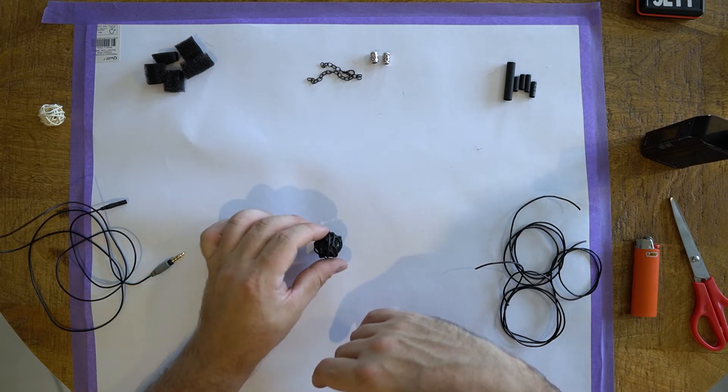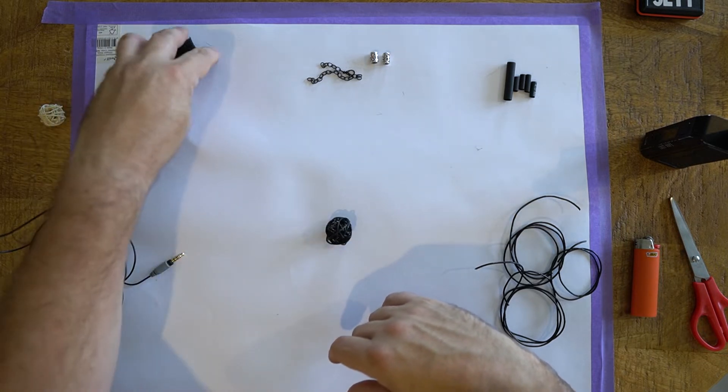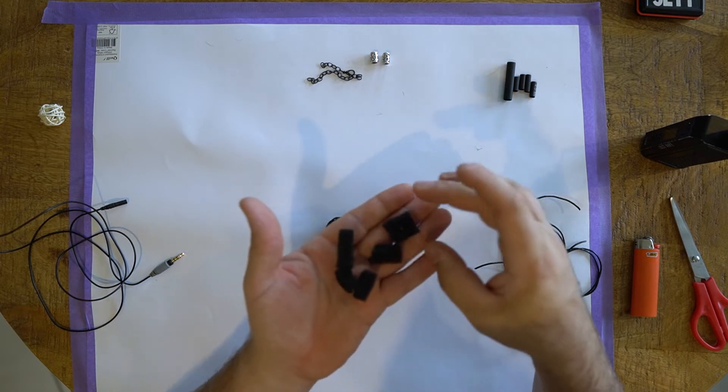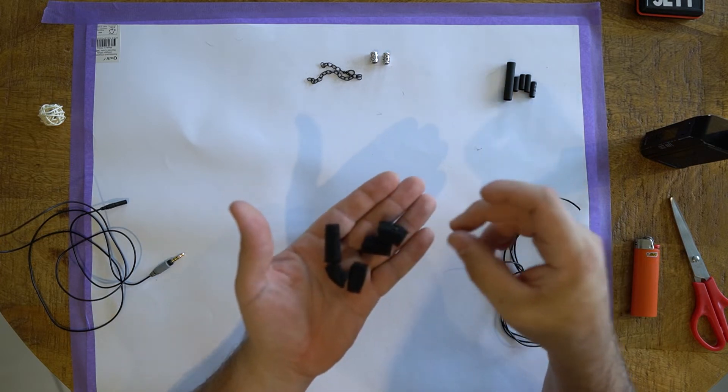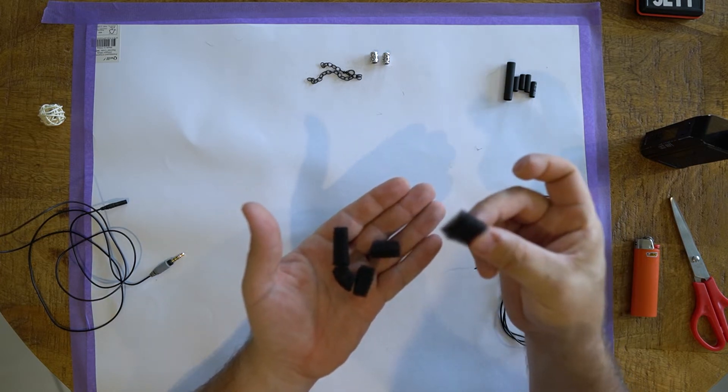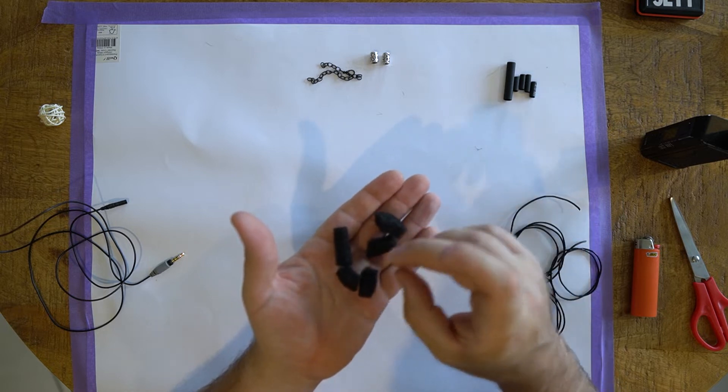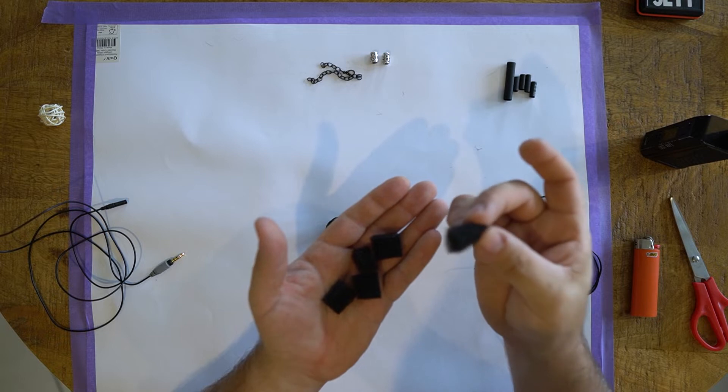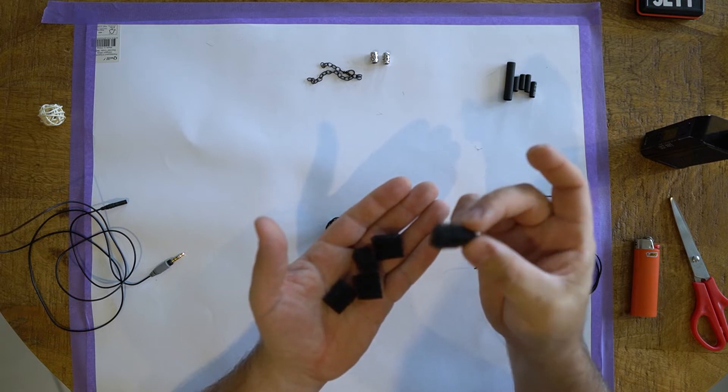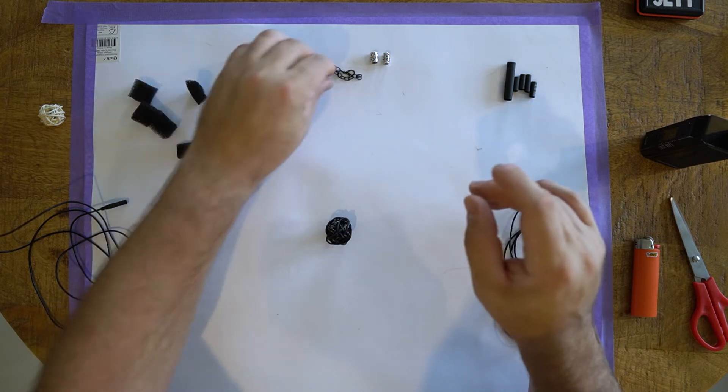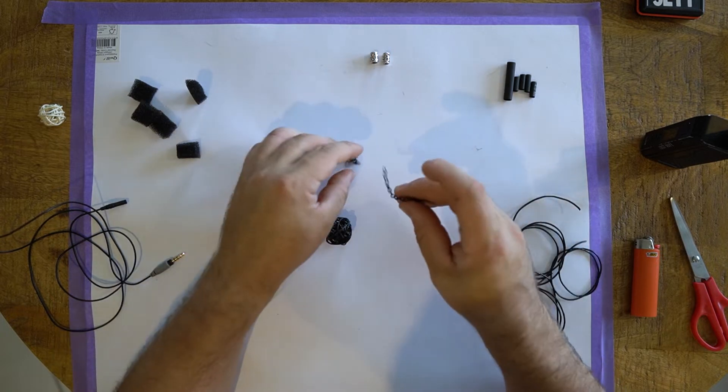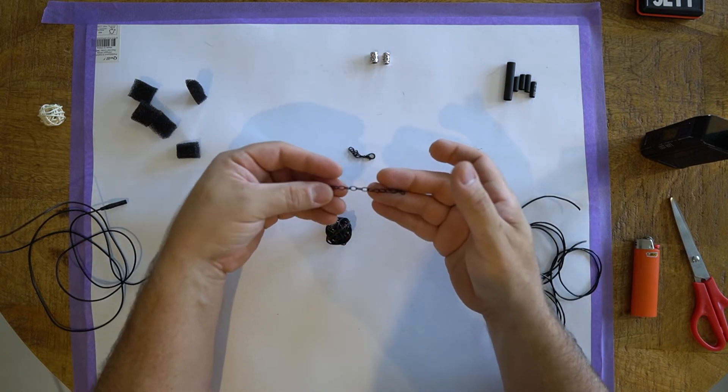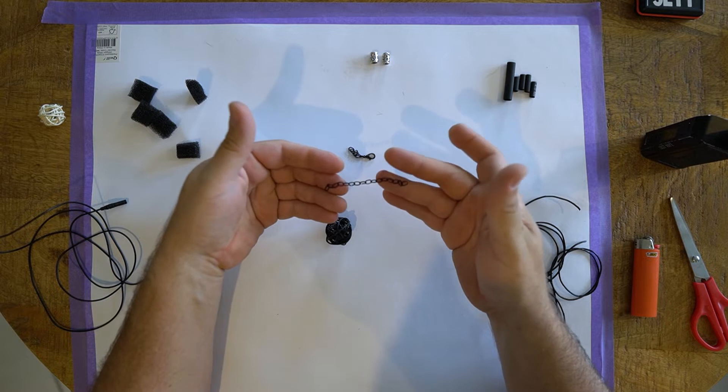Then we've got some foam insulation, just like an open cell foam. I actually cut this off the back end of one of my Rode video mic phones that sit inside the dead cats. Then a couple of links of jewelry chain, maybe eight centimeters with no end on it.